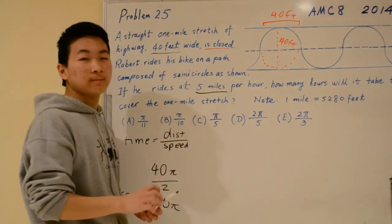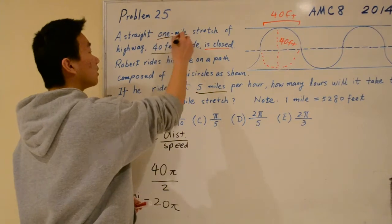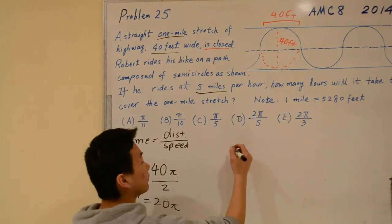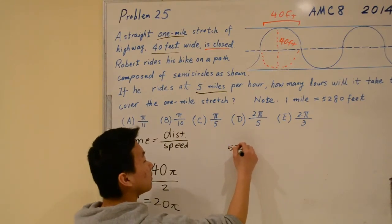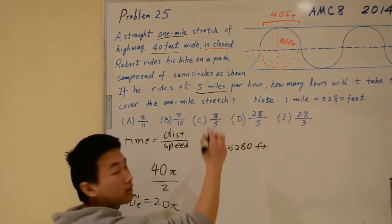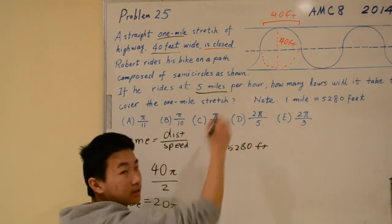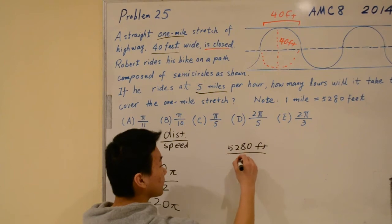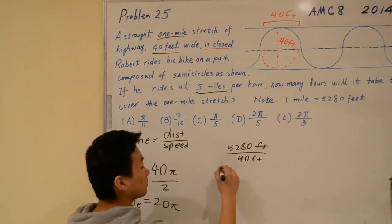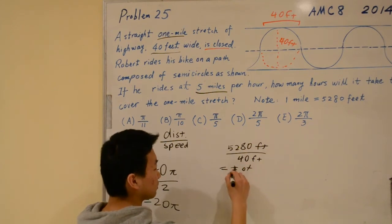It's given that the path is 1 mile long, so that's 5,280 feet. If we divide 5,280 by the length that each semicircle takes up, this should give us the number of semicircles.